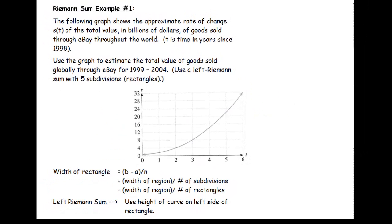Let's look at the first example. The following graph shows the approximate rate of change, s of t, of the total value in billions of dollars of goods sold through eBay worldwide. T is time in years since 1998. Use the graph to estimate the total value of goods sold globally through eBay for 1999 to 2004, using a left Riemann sum with five subdivisions — that's five rectangles.